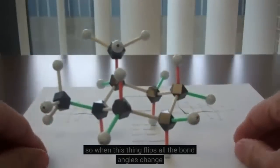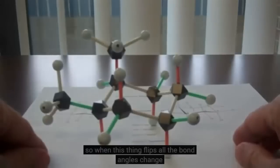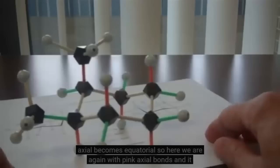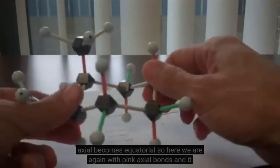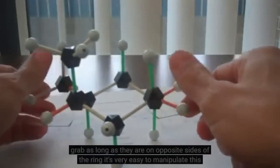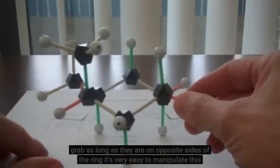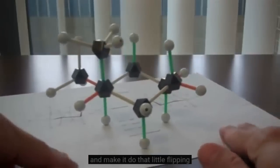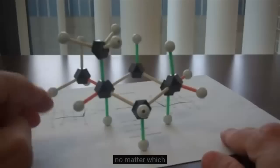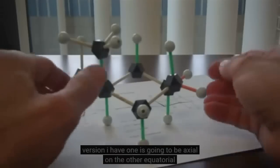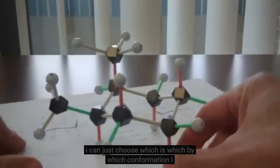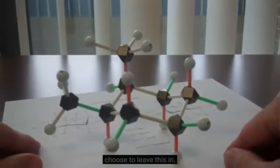So when this thing flips, all the bond angles change, and specifically axial becomes equatorial. Here we are again with pink axial bonds, and it doesn't matter which two carbons I grab as long as they're on opposite sides of the ring. Notice that the two methyl groups, no matter which version I have, one is going to be axial and the other equatorial. I can just choose which is which by which conformation I choose to leave this in.